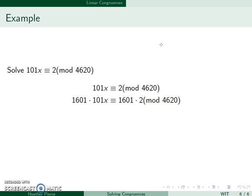1601 times 101 mod 4620 is 1. On the right, 1601 times 2 is 3202. So I have my equation, x is equal to 3202 mod 4620.